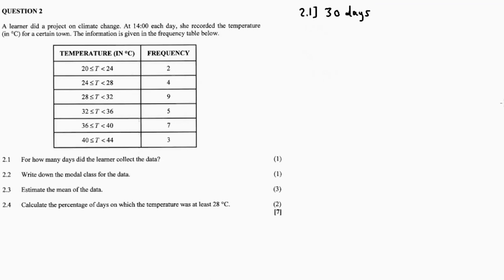Question 2.2 asks us to write down the modal class. The modal class is associated with the mode — the most frequent value in a data set. In a frequency table, the modal class is the class with the highest frequency. In our case, that is from 28 degrees to 32 degrees. So the modal class for 2.2 is 28 to 32 degrees.